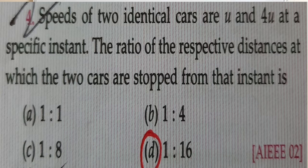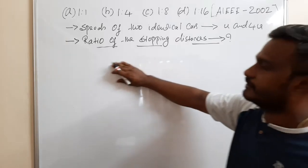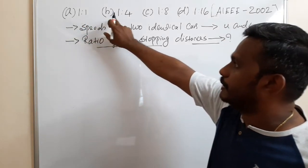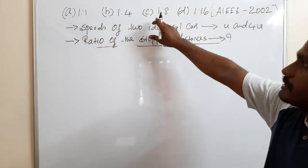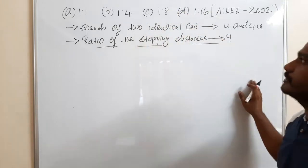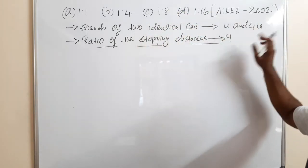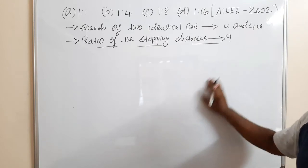Speeds of two identical cars are u and 4u at a specific instant. The ratio of the respective distances at which the two cars are stopped from that instant is — options: A) 1 is to 1, B) 1 is to 4, C) 1 is to 8, D) 1 is to 16. This question is from JMMS in the year 2002.